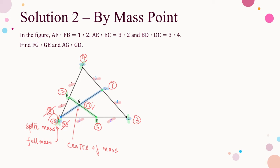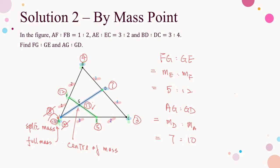Now, back to the question. We get the ratios of the line segments immediately from the masses calculated. FG to GE is given by the mass of E to the mass of F, that is 5 to 12. Similarly, AG to GD is 7 to 10. The ratios are the same as solution 1.